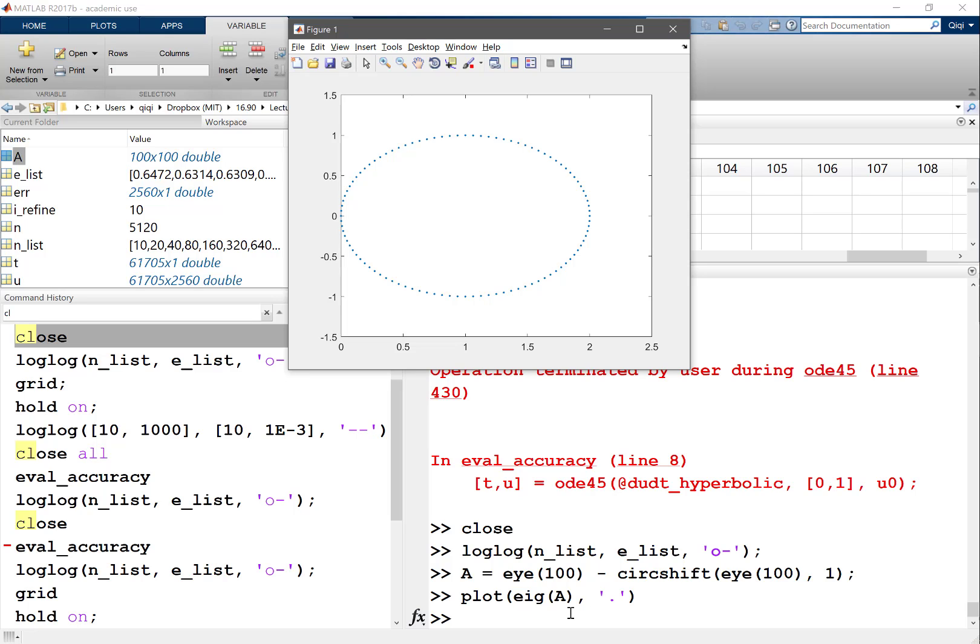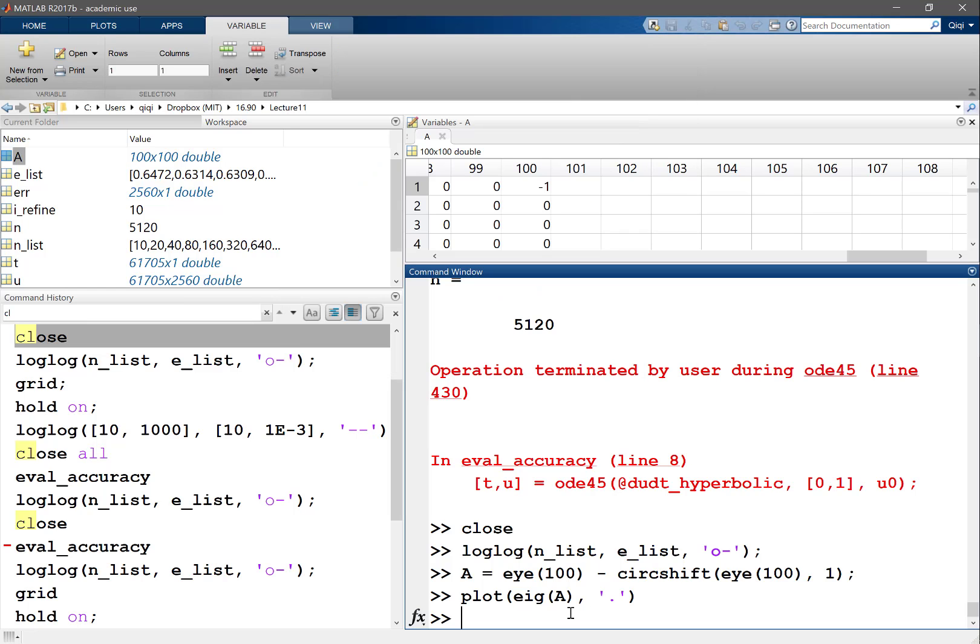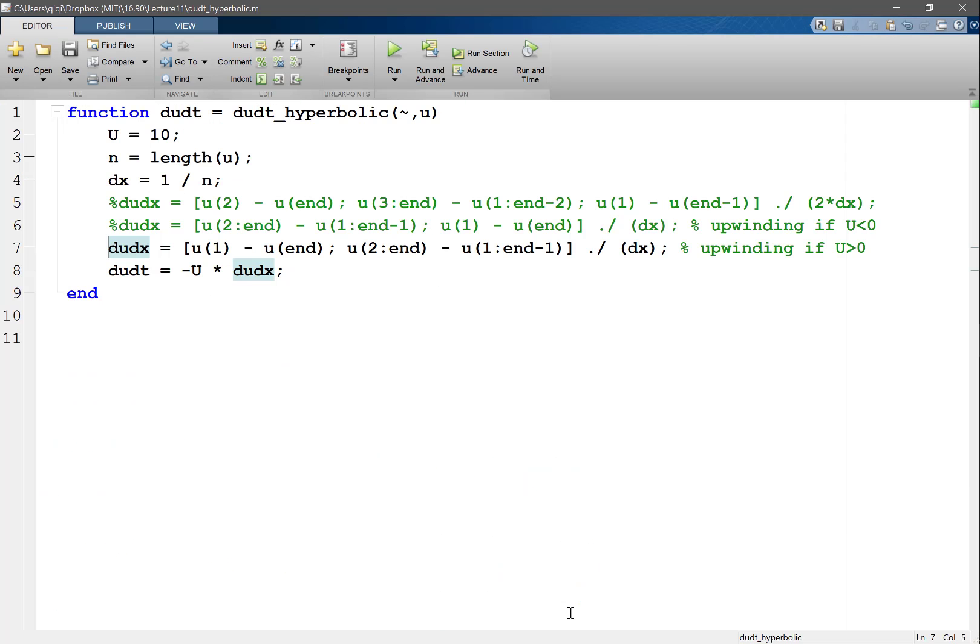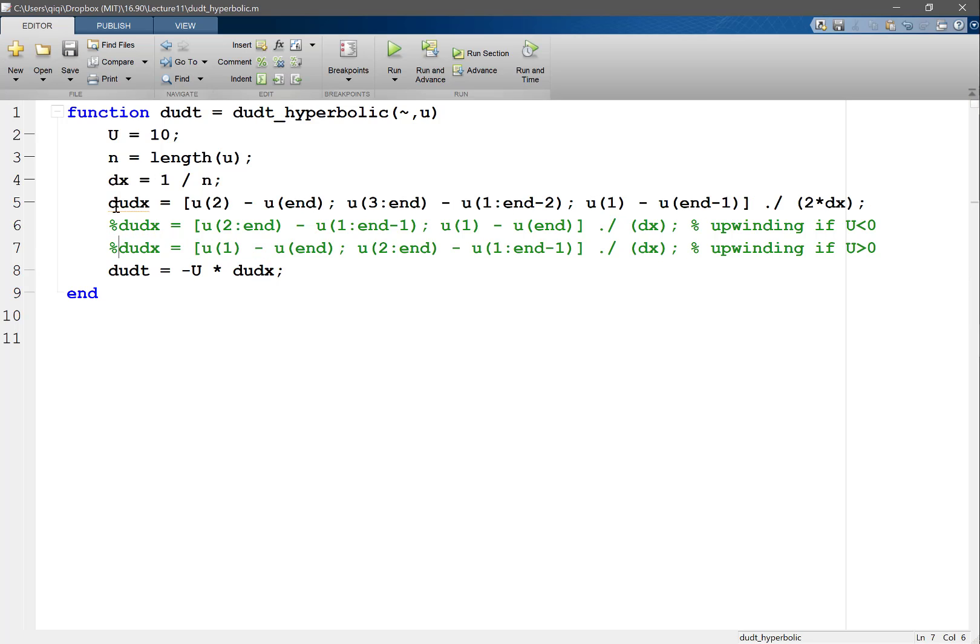So this is a pure advection equation. We can also solve the advection-diffusion equation. Let's go back to our good second-order scheme, and for du/dx we can also have d²u/dx². That's something very similar except I'm going to be dividing by dx squared and any minus is going to be replaced by plus.